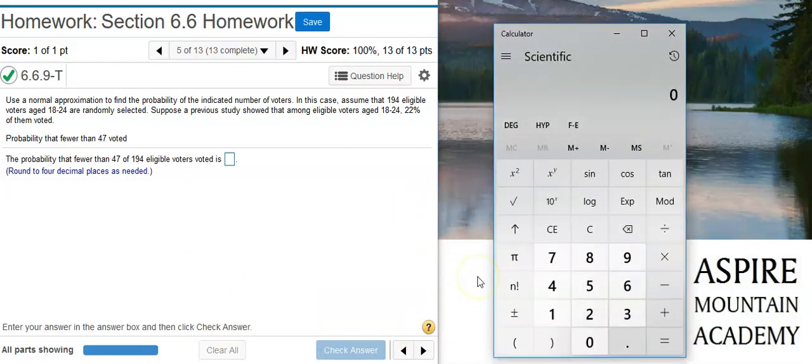So I need to calculate NP. N is going to be the total number of voters, which here we've got 194. And I need to multiply that by P, which here is going to be the 22% cited from the study.